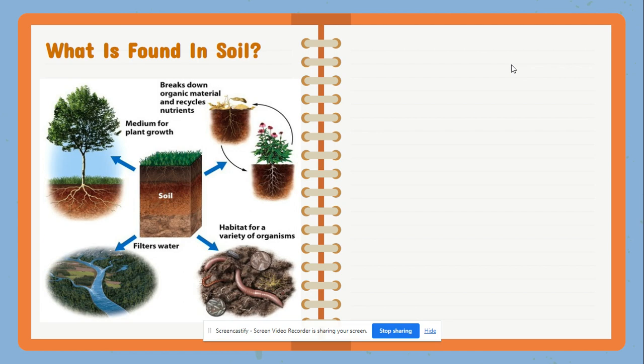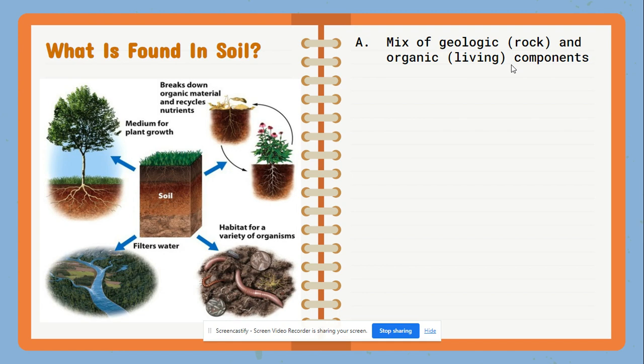Soil can also have inorganic items, things that are abiotic as well, such as minerals, rocks that help to form it, as well as things like sodium, potassium, nitrogen, and so on. So soil is going to be a mixture of both living and non-living things. The non-living parts are the actual geological rock that helps build and make up the soil, versus the organic things, which are the living components.